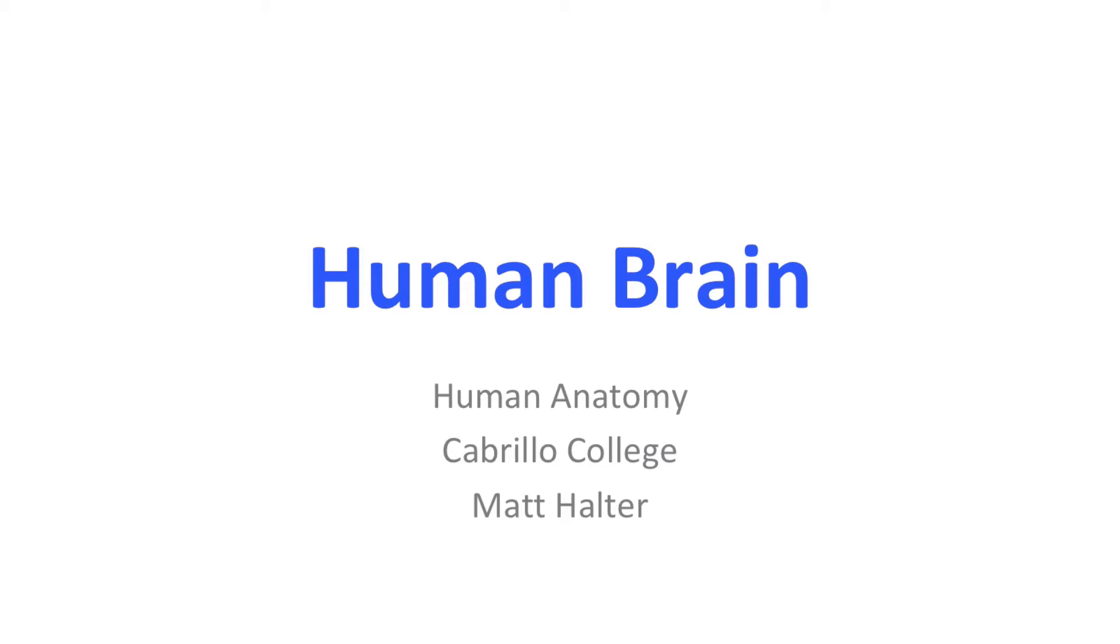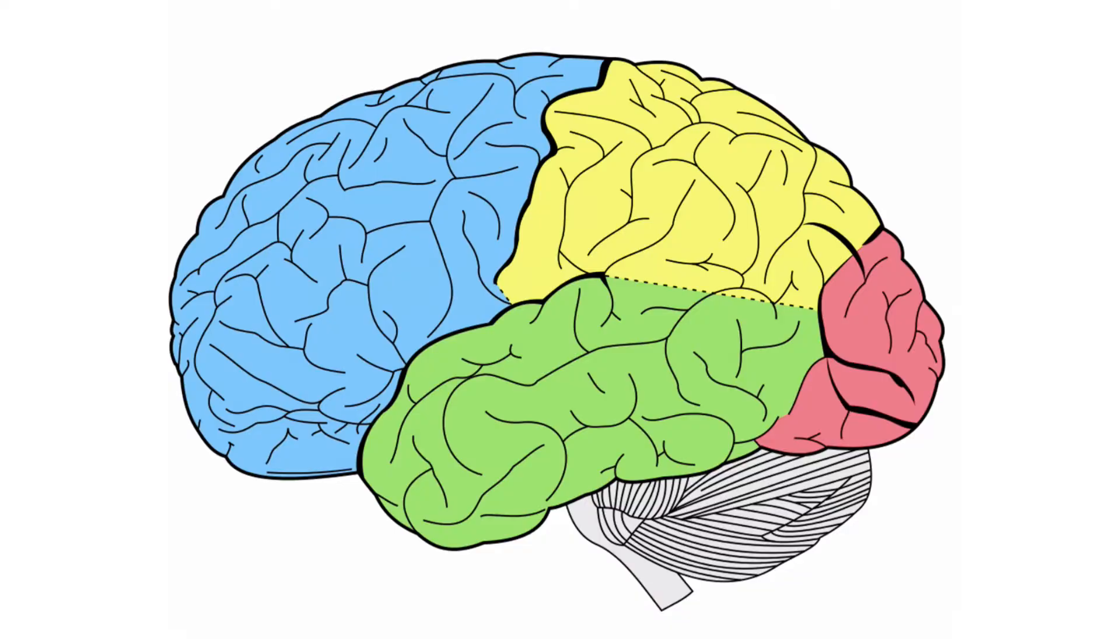Now that we've talked about the main cells of the nervous system, let's get going on some of the big details of it, and we're going to start with the human brain, which looks something like this.